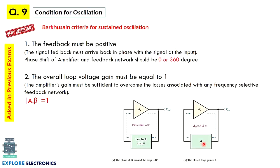And what happens if this criteria does not meet? That is also the question you may get. If A into beta increases or A into beta decreases than 1, what happens? That I have explained in the video you can see.